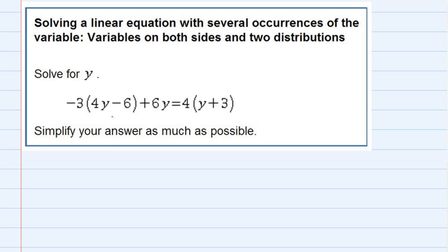Solving a linear equation with several occurrences of the variable, variables on both sides, and two distributions. We're asked to solve for y, and one of the first things I want to do with this equation is get rid of these two parentheses. They told us in the problem type how we're going to do this. We're going to distribute to get rid of those parentheses.